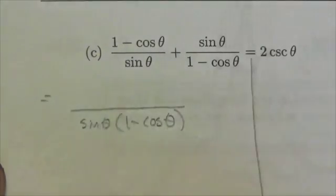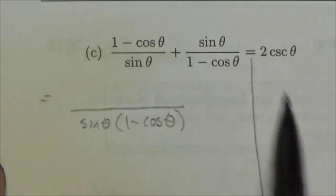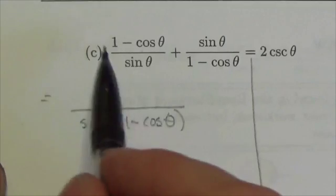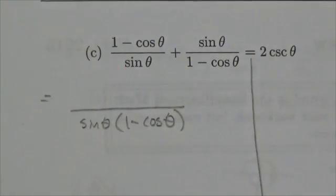Up here, that is going to get me 1 minus cos theta times 1 minus cos theta, and then plus sine theta times sine theta. Now, I'm going to do this 1 minus cos theta immediately. It would have been brilliant had this been 1 plus cos theta and 1 minus cos theta, because then I would get that difference of squares, that binomial conjugate, and then the middle term would cancel.